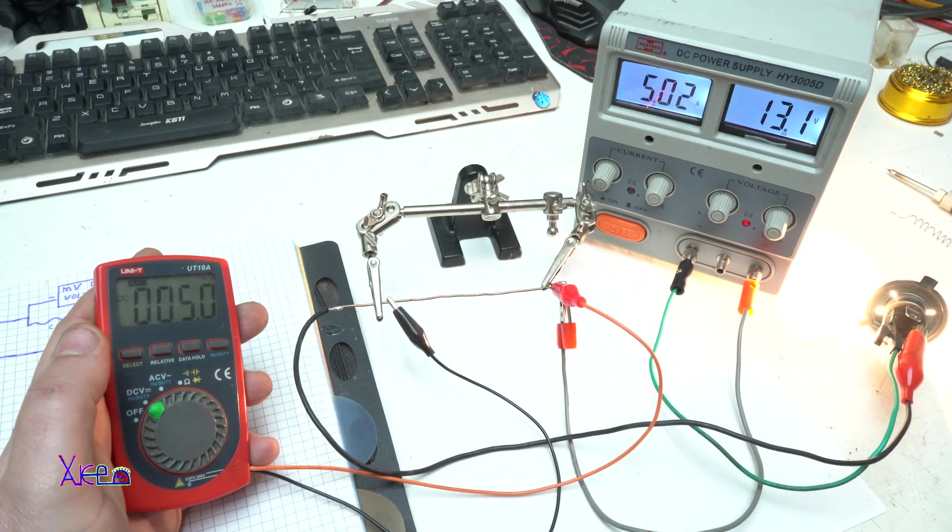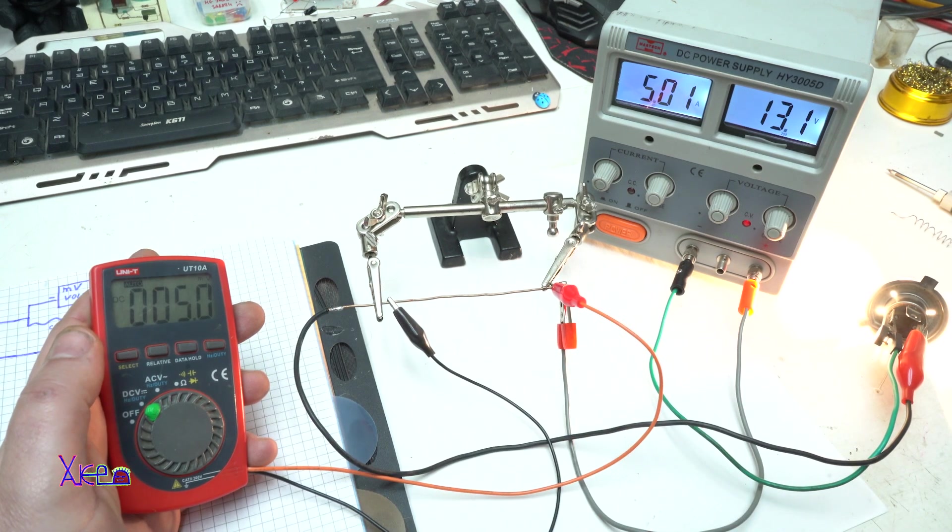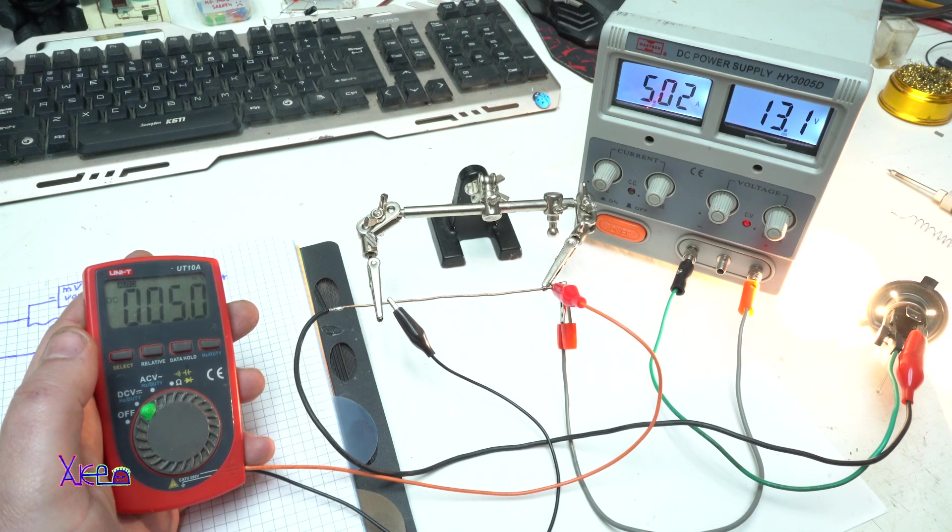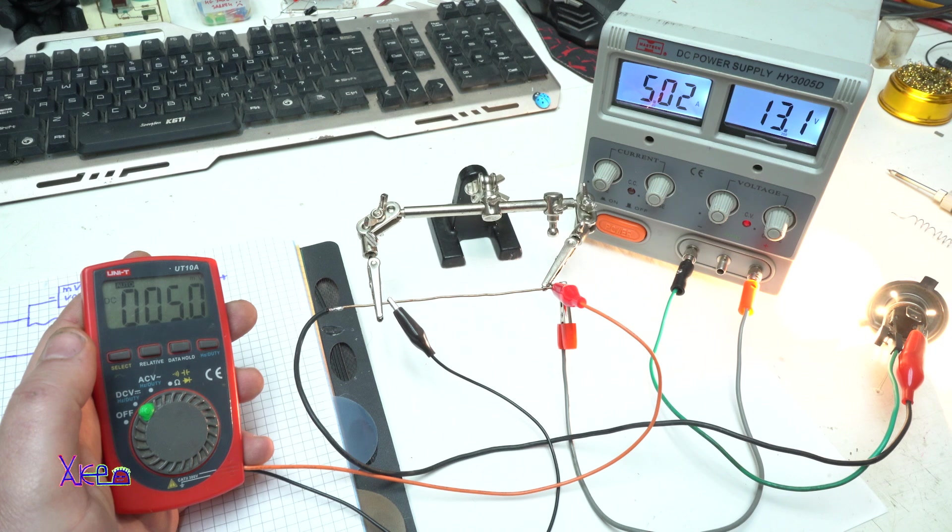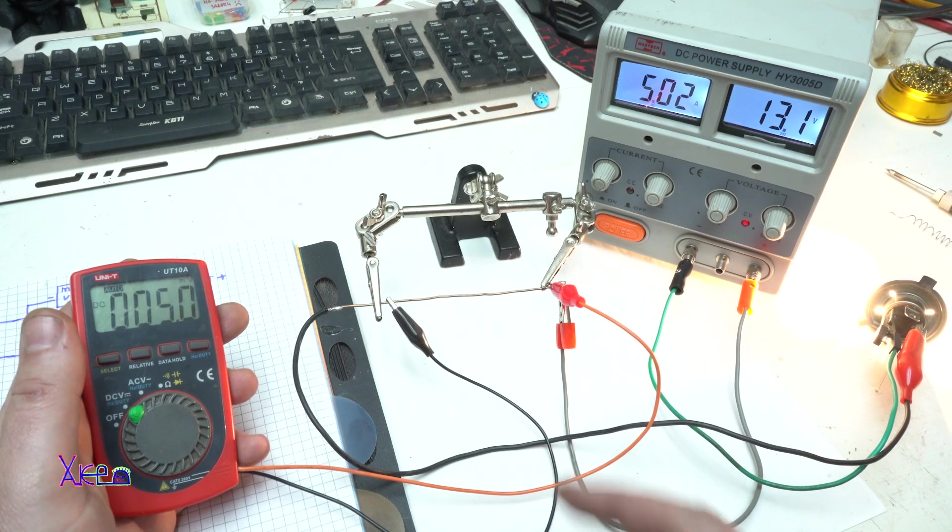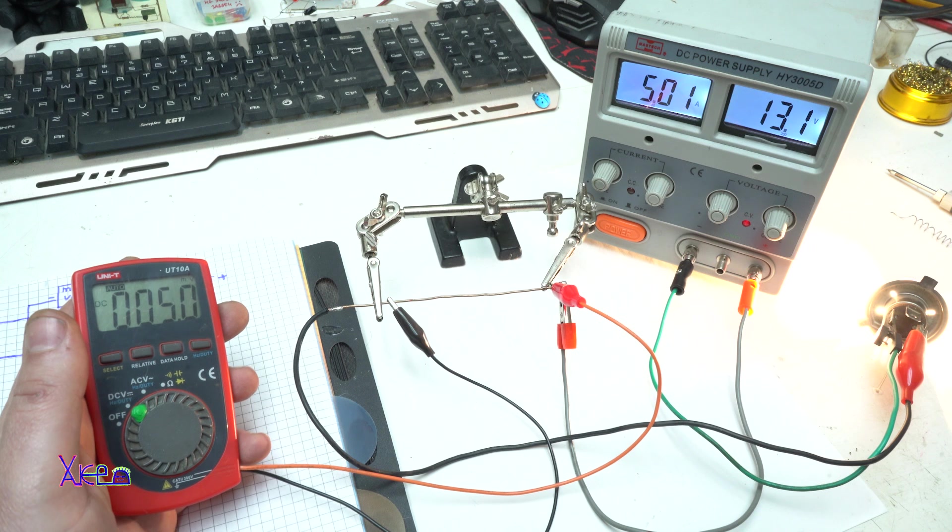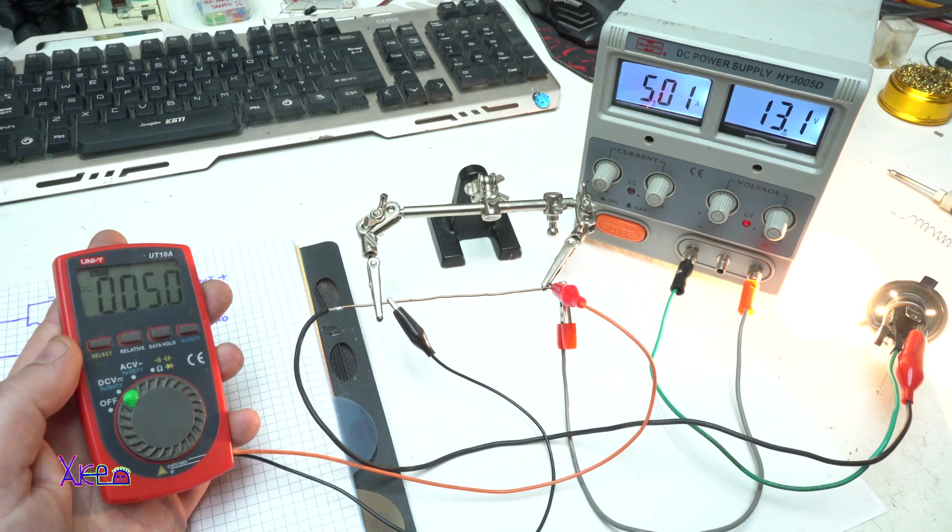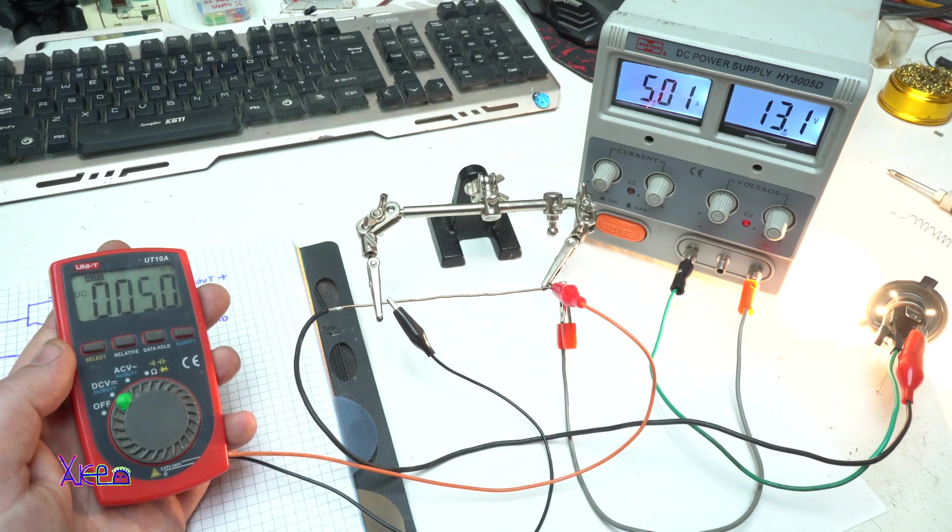This is working great and it's a nice experiment. I hope you learned something new and learned how to make a shunt resistor if you want to measure high power currents and your multimeter cannot measure that. All right.